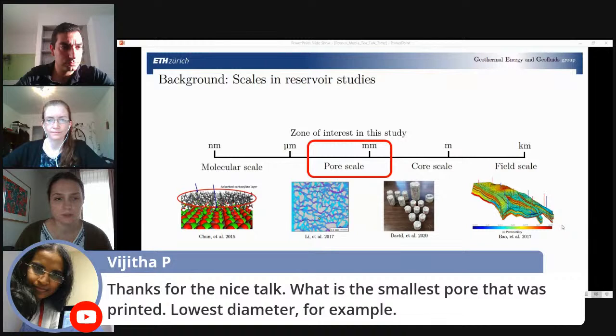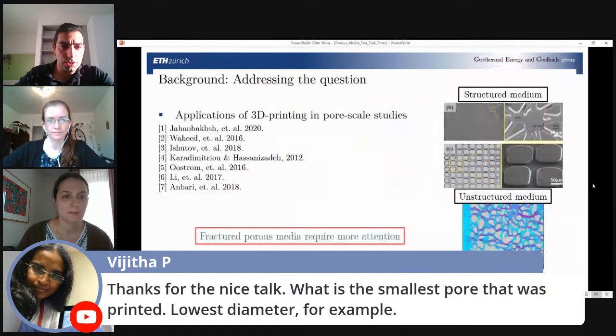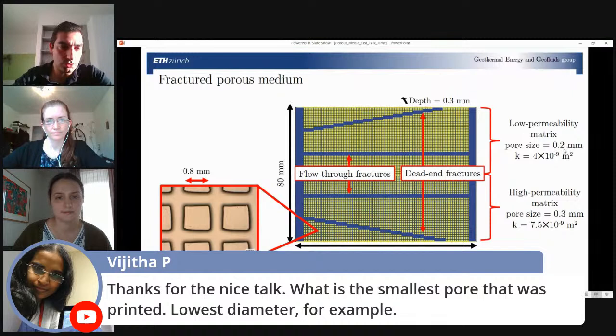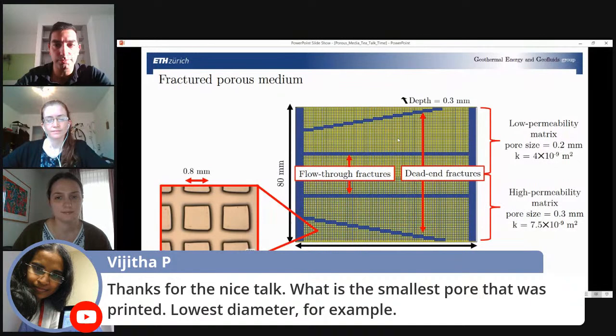I think this is also directly leading to the first question which we have from our audience, from Vita P. Thanks for the nice talk. What is the smallest pore that was printed? Lowest diameter, for example. Yes, so here the smallest pore that we have is 200 microns or 0.2 millimeters, which is the spacing between two square pillars in the low permeability matrix. And the depth of the geometry is also 300 microns or 0.3 millimeters.